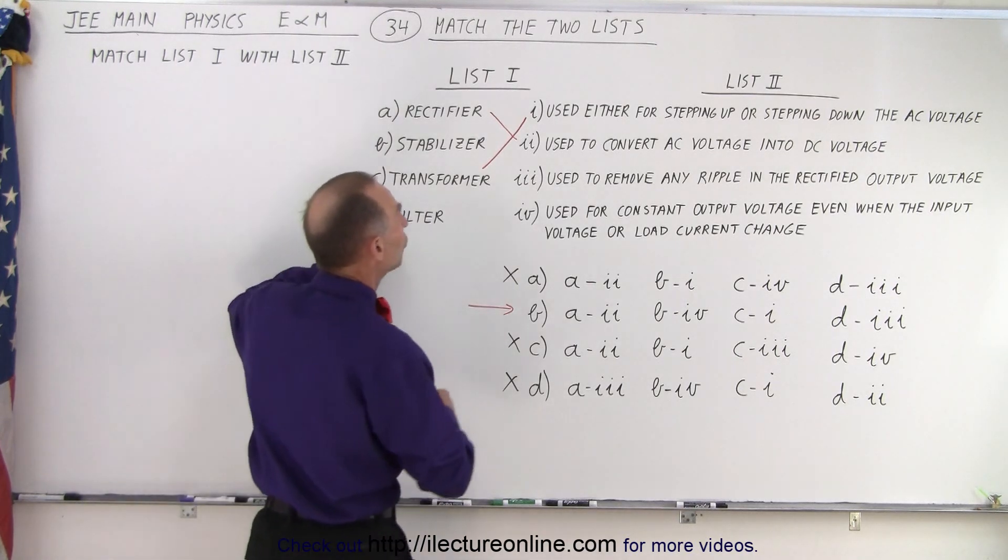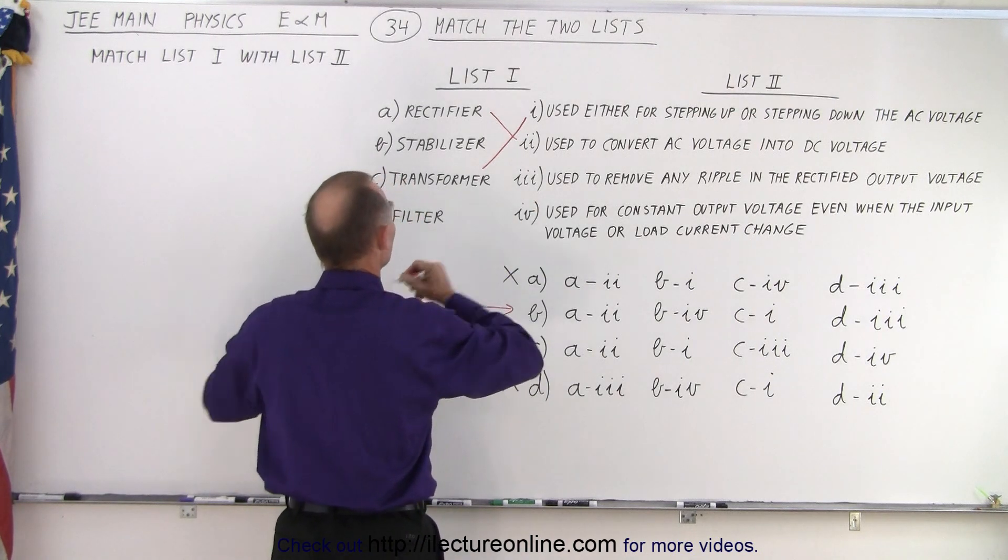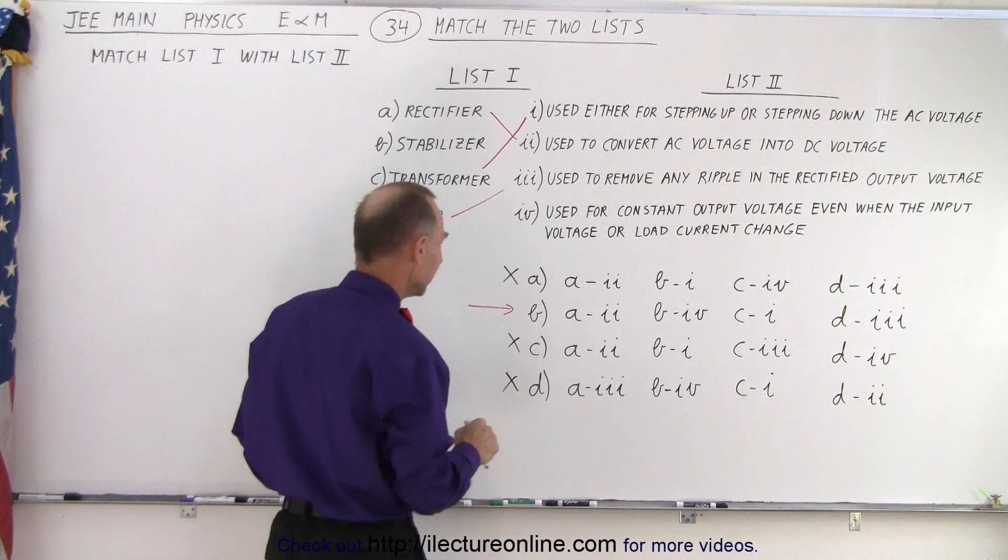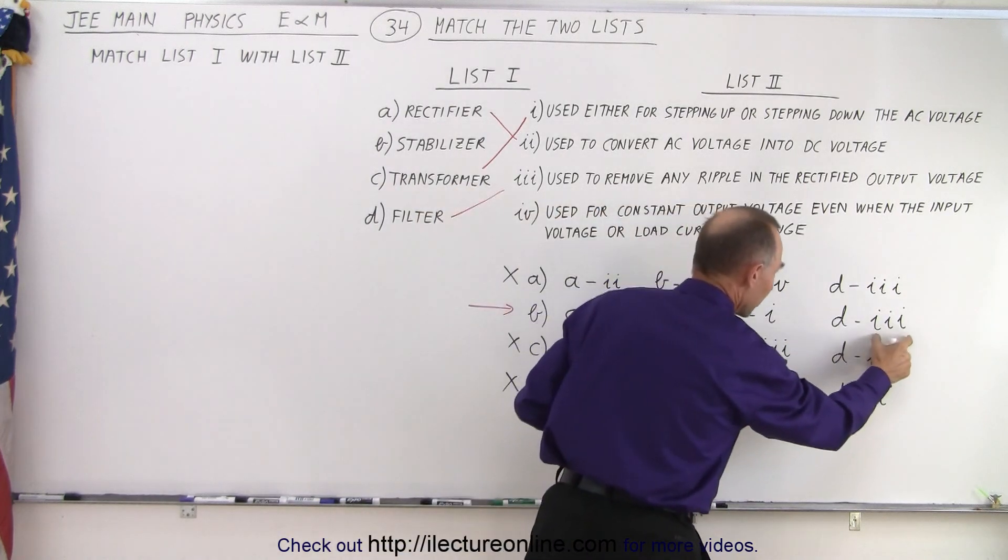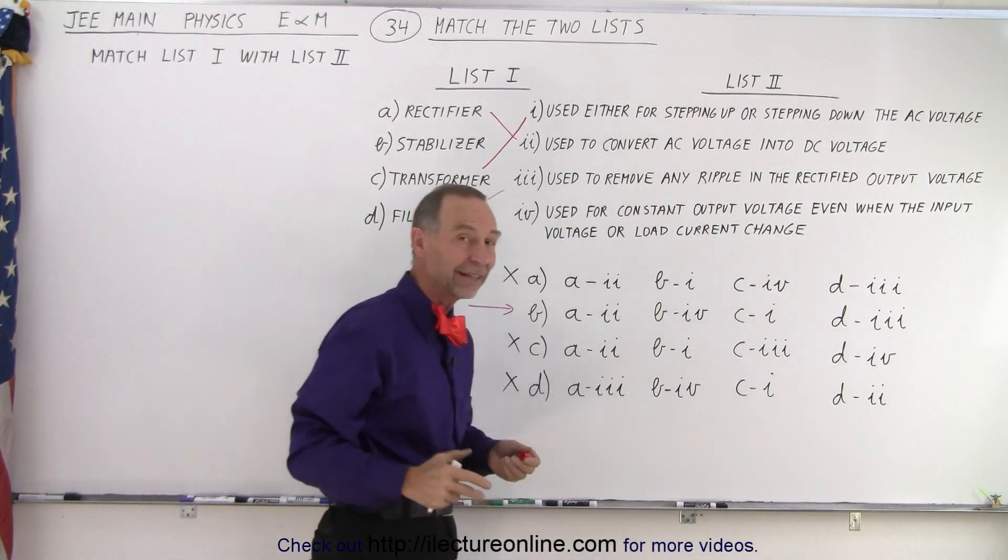So filter is used to remove ripples. So D is associated with triple I. And so you can see that D, triple I, yes, that is still valid. And finally, one that you may not be as familiar with is the stabilizer.